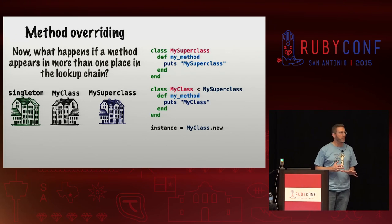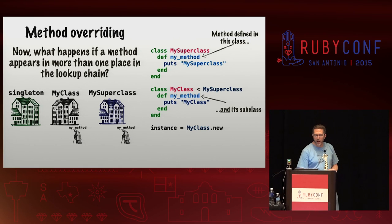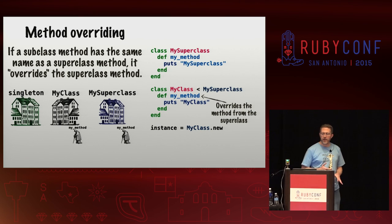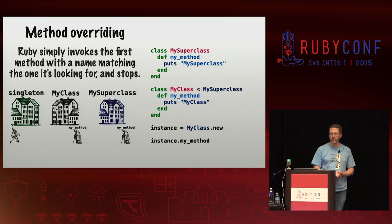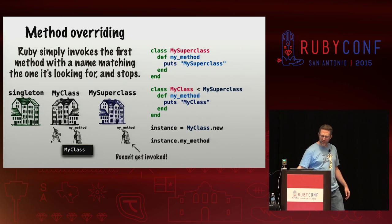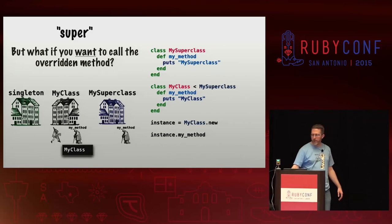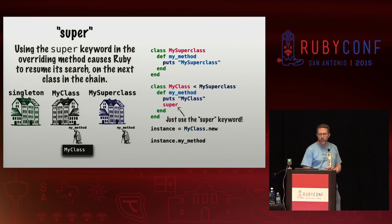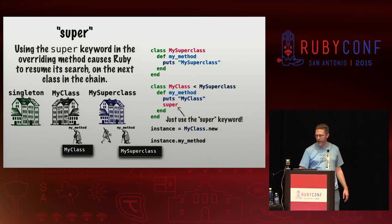Now what happens if a method appears in more than one place in the lookup chain? For example, if we define it on my super class and then define it on my class as well. If a subclass method has the same name as a super class method, it'll override that super class method. Ruby will simply invoke the first method with a matching name and stop. But if you want to call that overwritten method, you can use the super keyword within the overriding method. That'll cause Ruby to resume its search on the next class in the chain.